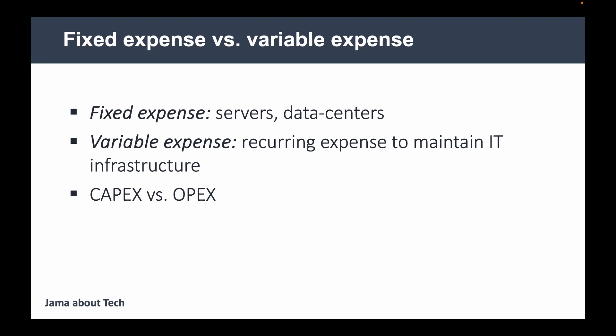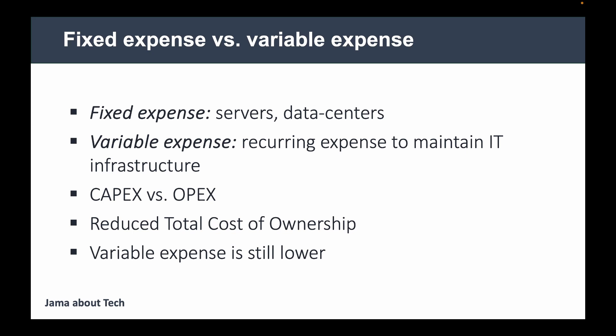With cloud, you don't need to incur fixed expenses — no additional servers or data centers — meaning you trade fixed expense for variable expense. This reduces your total cost of ownership, which is the total cost of assets owned by the business. Even when trading fixed for variable expenses, your variable expenses are still lower. Before the cloud, you'd pay employee salaries, maintain server rooms, and handle miscellaneous equipment expenses. With cloud, variable expenses are still lower than with on-premise infrastructure.